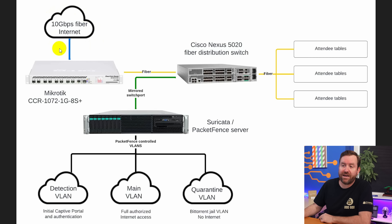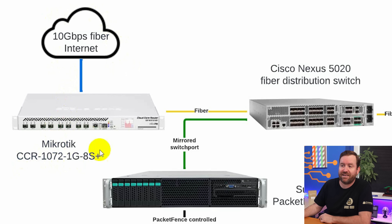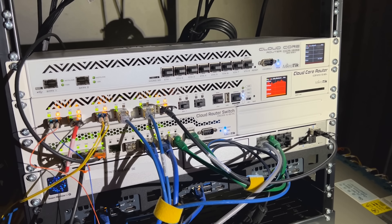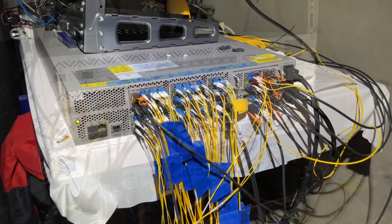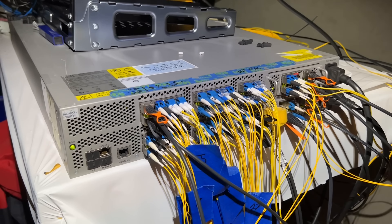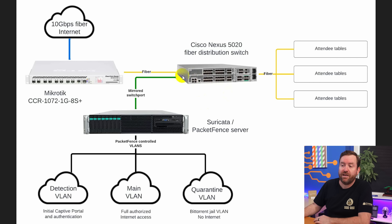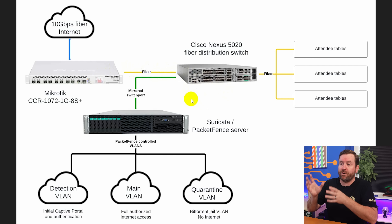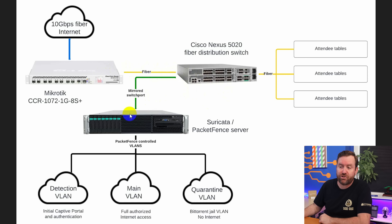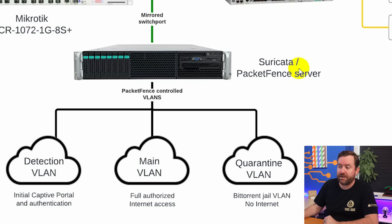It all starts with a 10 gigabit fiber internet connection coming into a MikroTik CCR1072. That MikroTik router is fiber connected over to a Cisco Nexus 5020 fiber distribution switch. This is actually the first year that PDXLAN is providing fiber out to all of the attendee tables instead of ethernet. In that Cisco Nexus 5020 switch, there is a mirrored switch port — a mirror of the port that goes over to the MikroTik router. So basically, all traffic going from that Cisco Nexus switch over to the MikroTik and out to the internet is mirrored over to this 2U server.